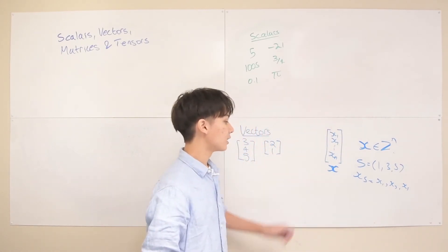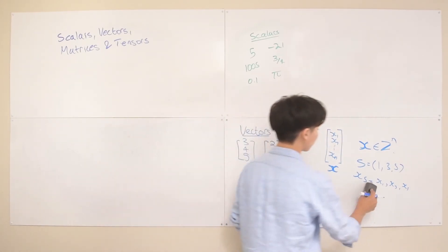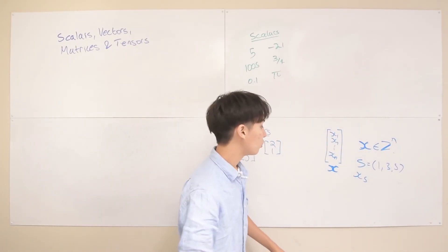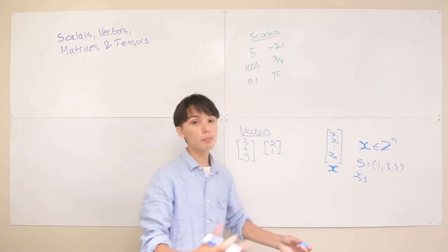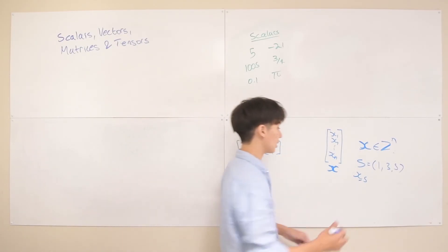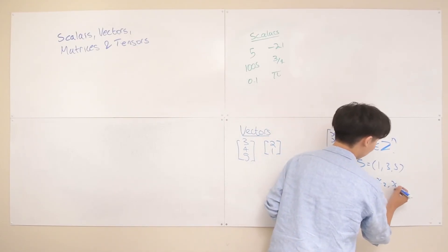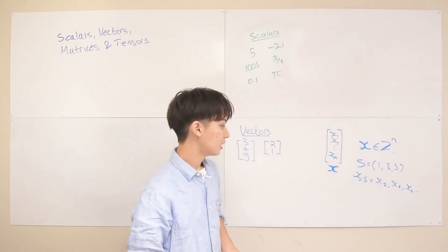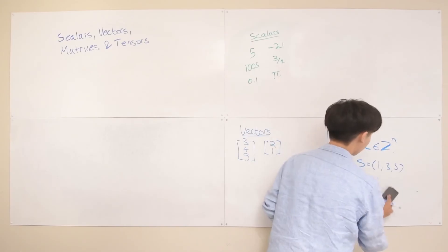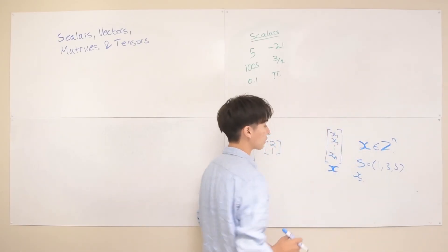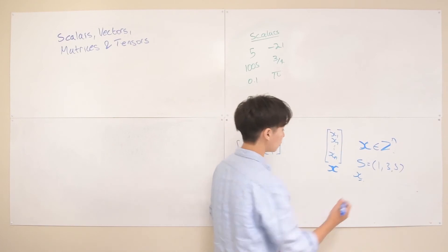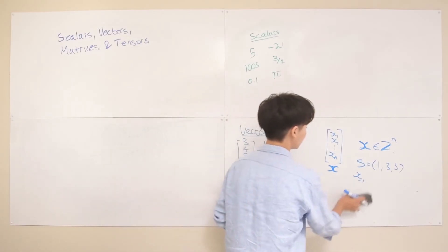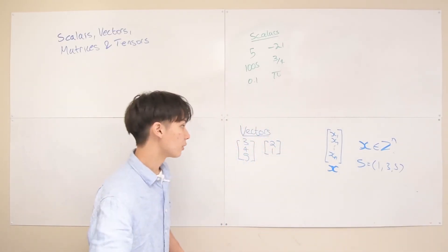If we want every element in this vector except for the first, third, and fifth elements, we would put a minus sign in front — that takes the complement of that set — so this would become [x₂, x₄, x₆, ... xₙ]. And similarly, if you want every element except for the first, we would do x₋₁, taking the complement of {1}, which is every number except 1. That's how you index into a vector.